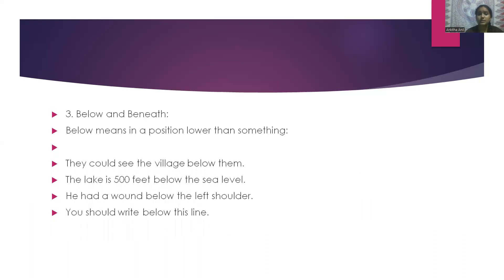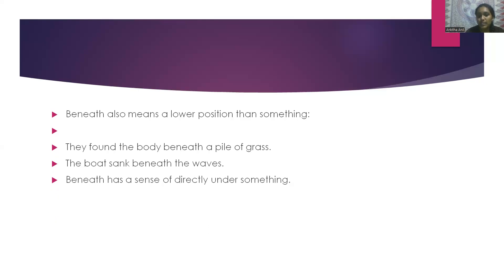The next words are 'below' and 'beneath'. Below means in a position lower than something. For example: they could see the village below them. The lake is 500 feet below the sea level. Beneath also means a lower position than something. For example: they found the body beneath a pile of grass. The boat sank beneath the waves. Beneath has a sense of being directly under something.